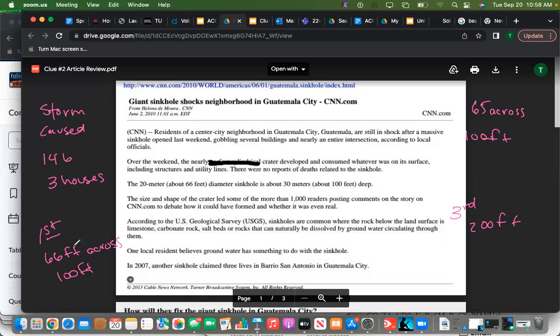What I want you to do is I want you to find the volume for each one of these articles. On the first one they told us that it was 66 feet across, 100 feet deep, so find the volume for that guy. On the second one they told us 65 across, 100 feet deep. And then the third one they told us 200 feet deep. Do it in feet because everything's in feet for this one. In America. So take a second, you are calculating that.